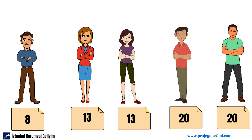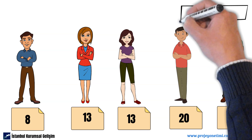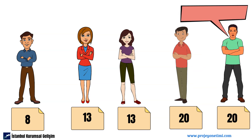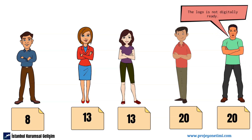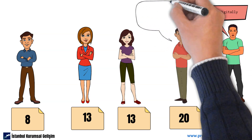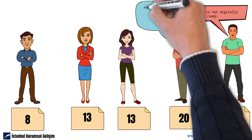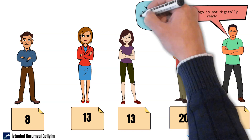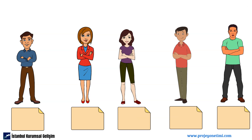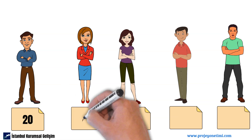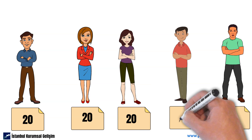After these estimates, team members discuss to determine what the differences between the estimates are. A team member who chose the number 20 says that the logo to be put on the site is not digitally ready and needs to be drawn. Another team member states that professional photography is required for the pictures to be used on the homepage. The other team members admit they did not think about these details, and the team agrees on the number 20 as the difficulty level of the work.